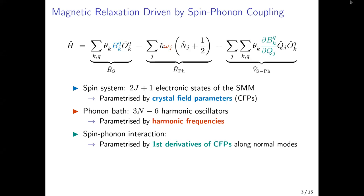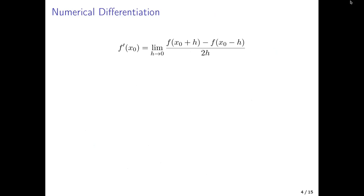The hard part has always been to calculate those spin-phonon couplings in the form of those derivatives. We employ this Hamiltonian to calculate transition rates between electronic states and then solve the master equation to get the overall Markovian relaxation rate.